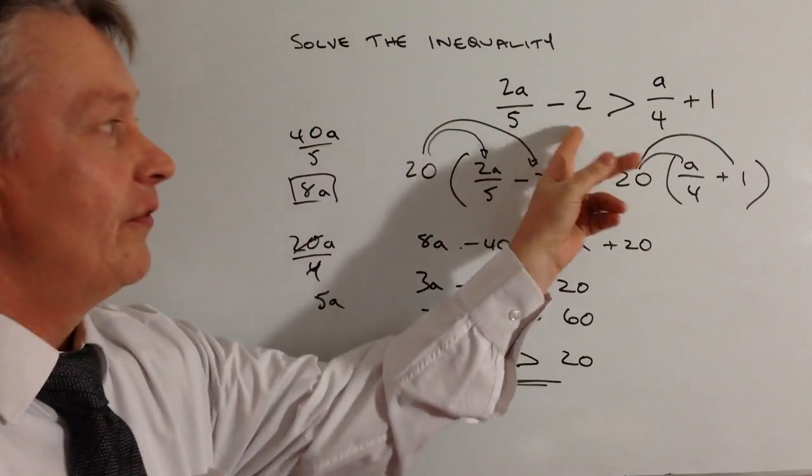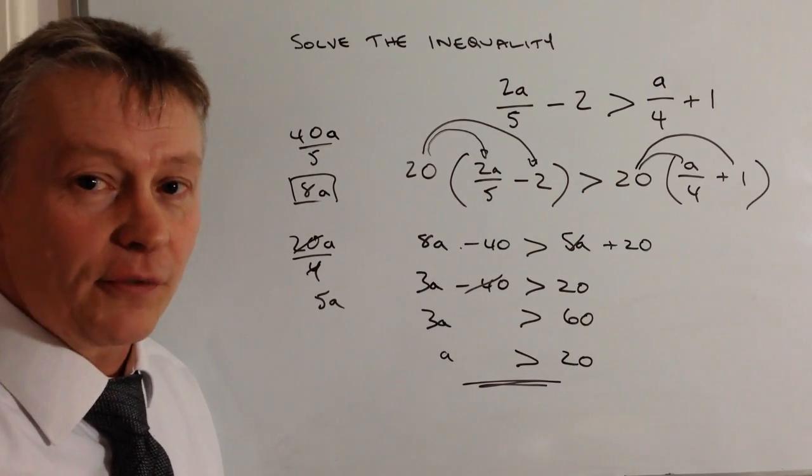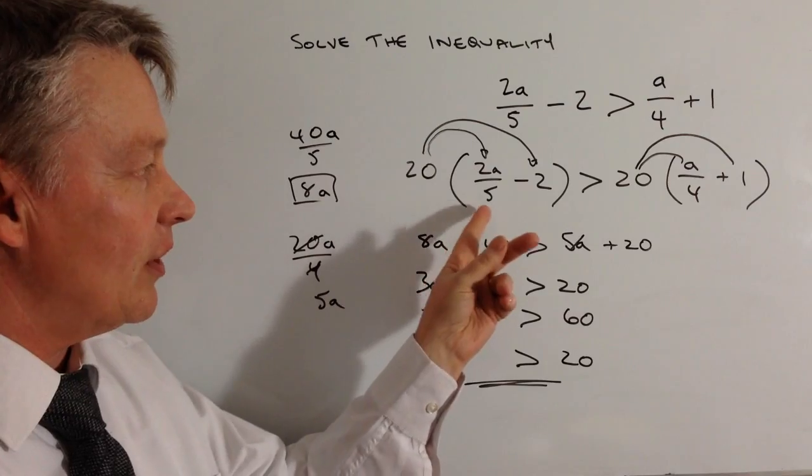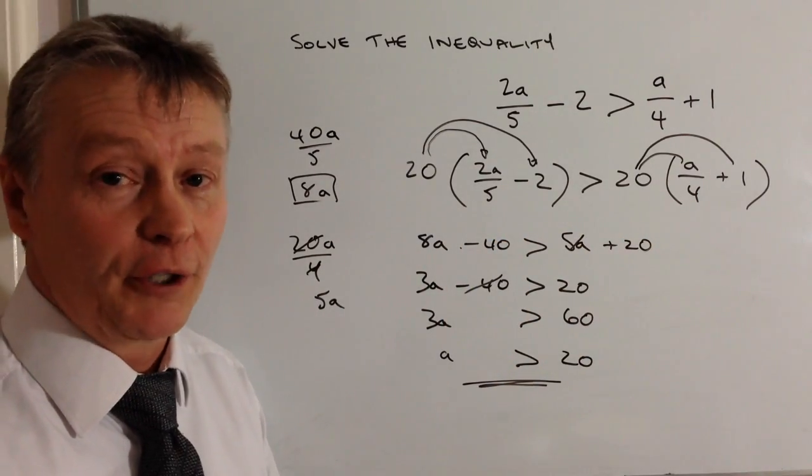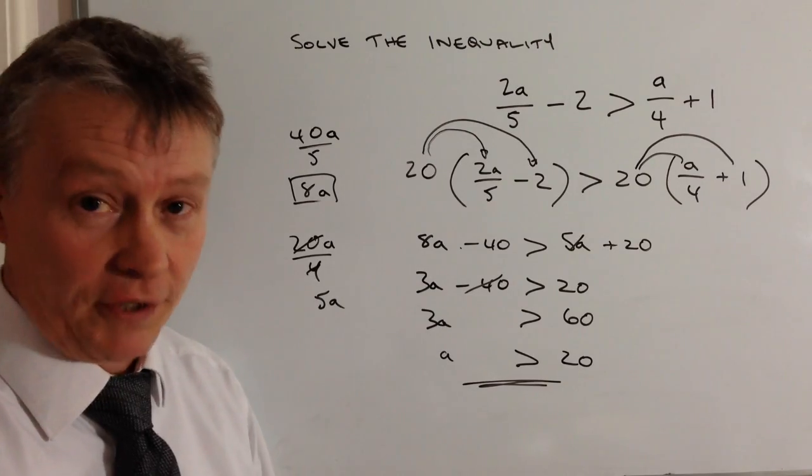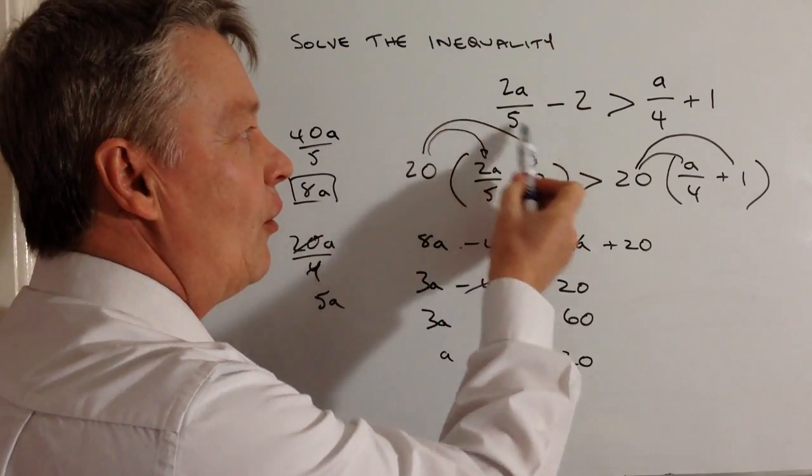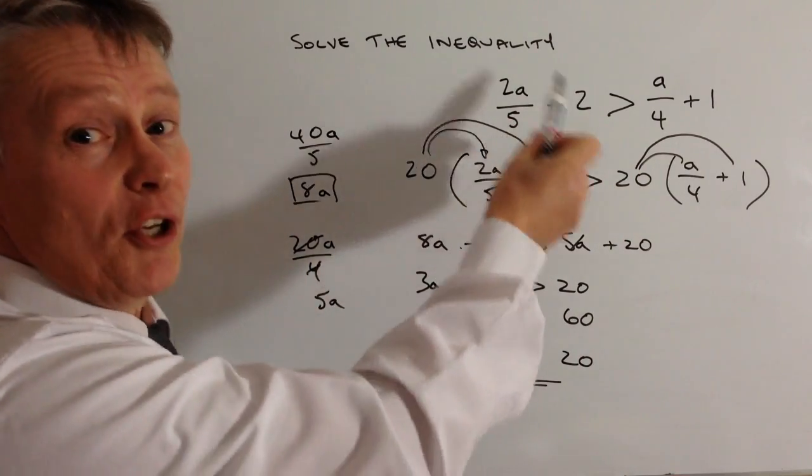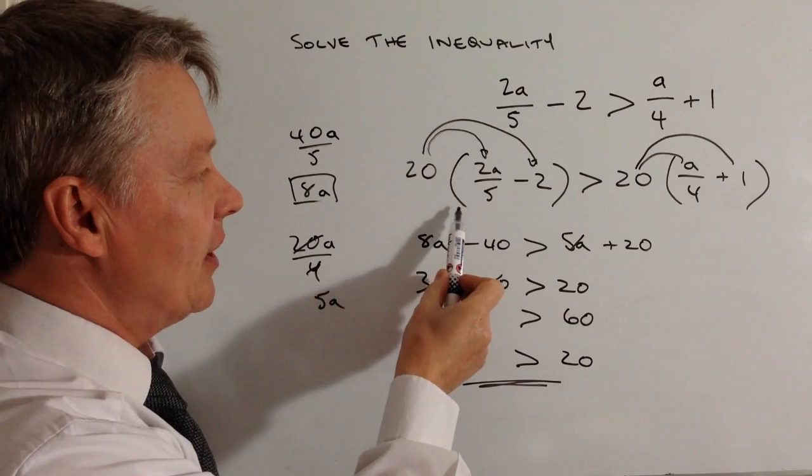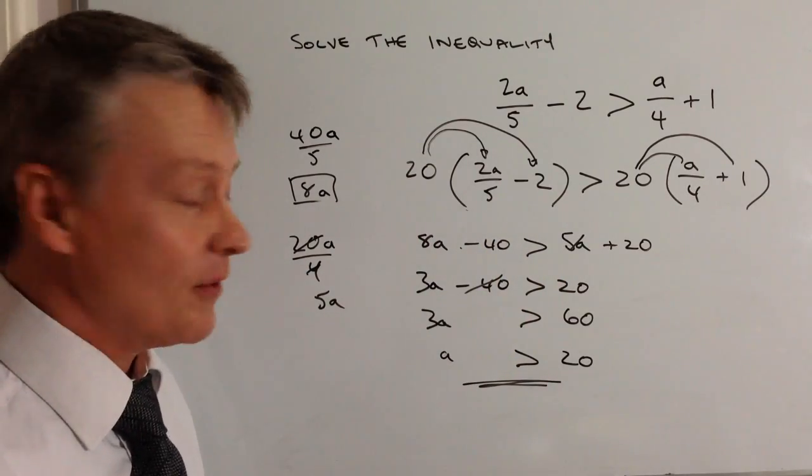And that solves the inequality. The key takeaways are: you need to get rid of denominators by multiplying through by the lowest common multiple. Also remember you're multiplying the whole side, not just one term. The best approach is to use brackets, which reminds you to multiply out each term.